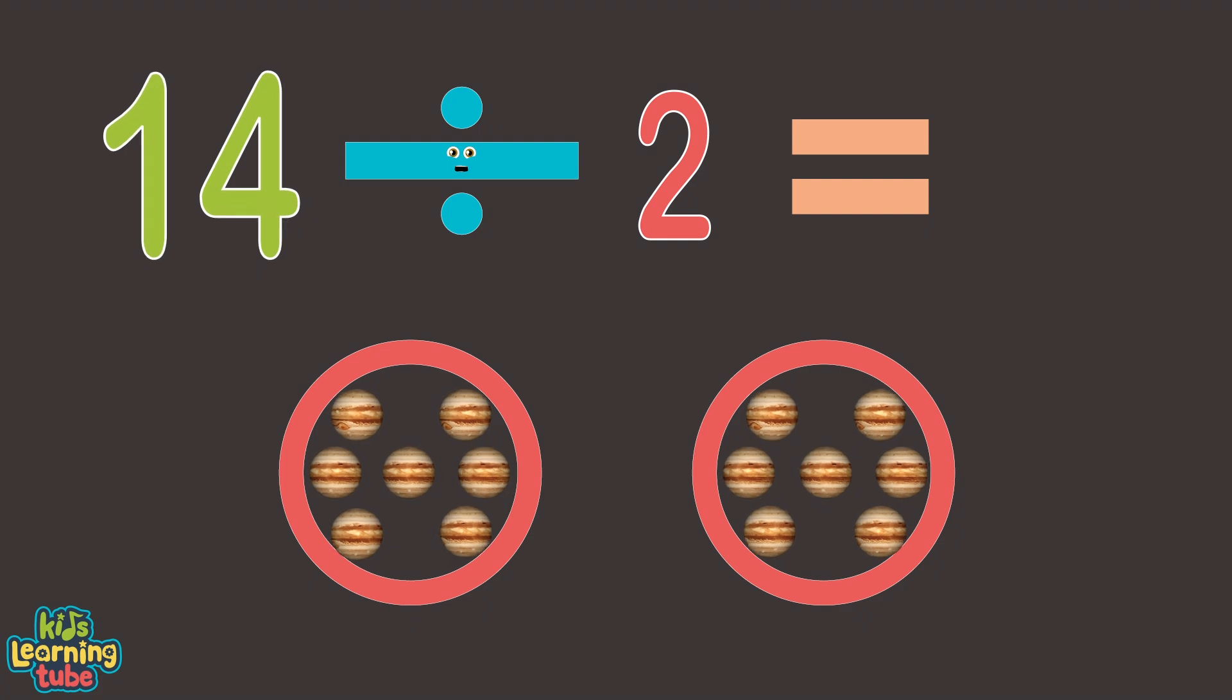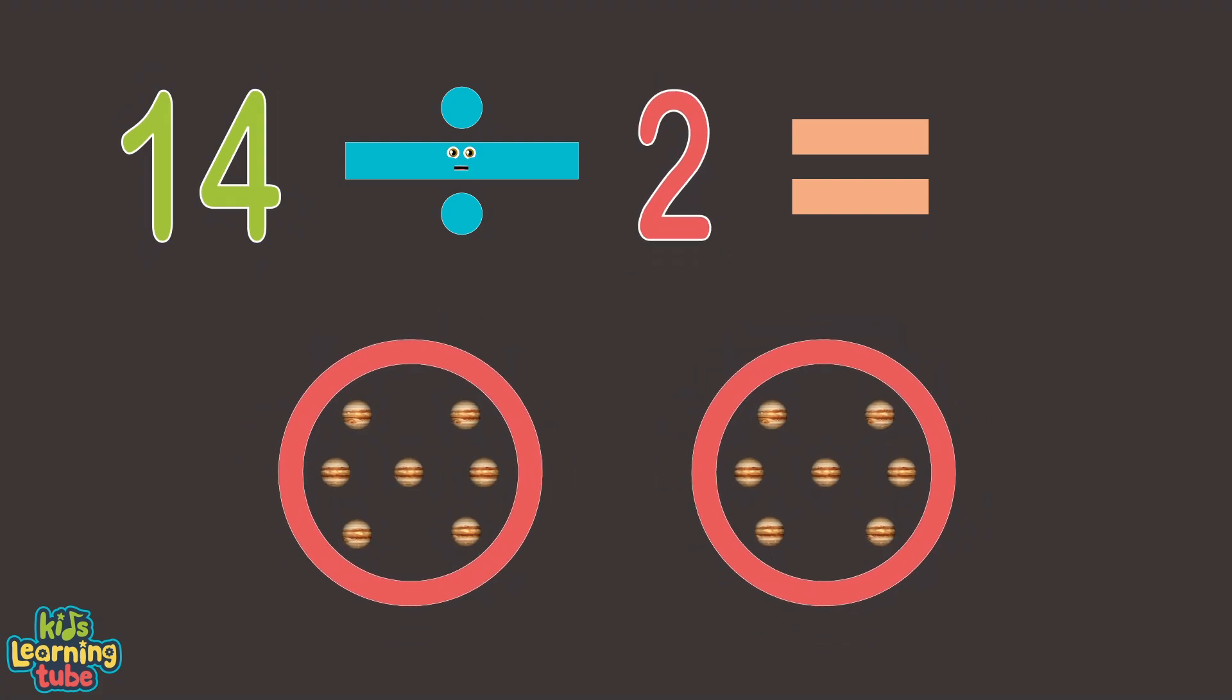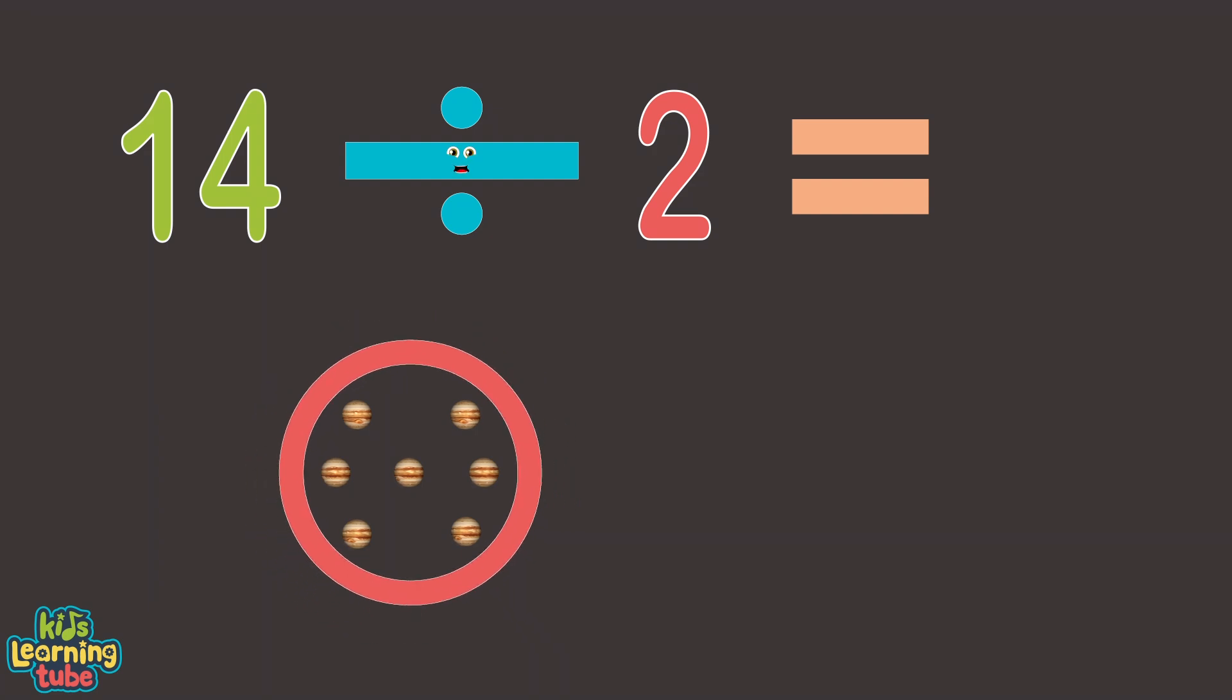Now that we've counted 14 dots within the two circles we drew, let's count how many dots are in one circle to see how many we accrue. 1, 2, 3, 4, 5, 6, and 7. 7 is the answer that we're looking for in this equation. This tells me 2 goes into 14 7 times. This is how you do basic division.